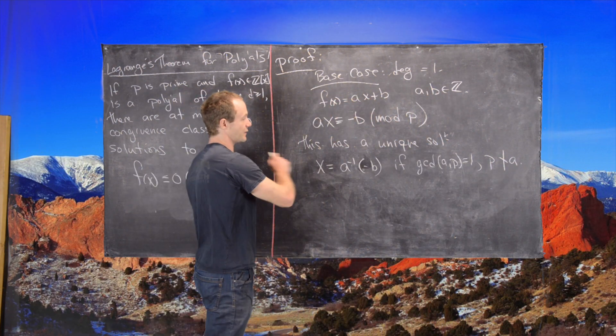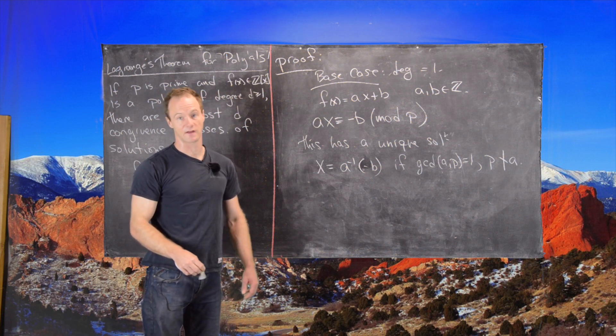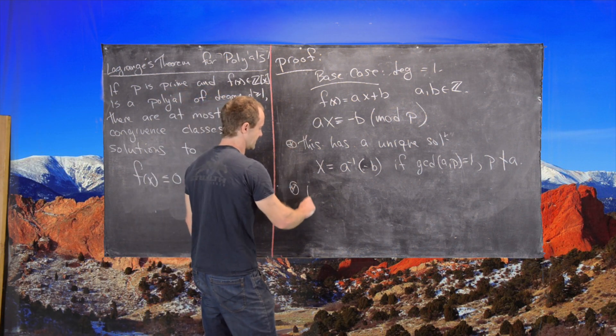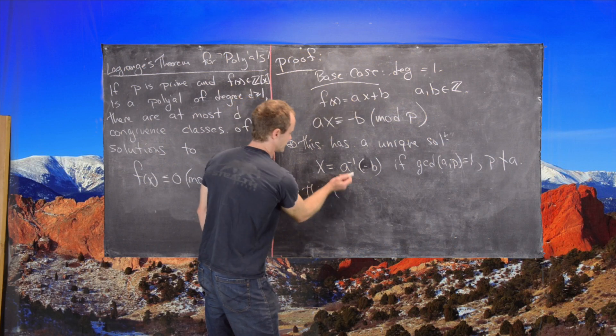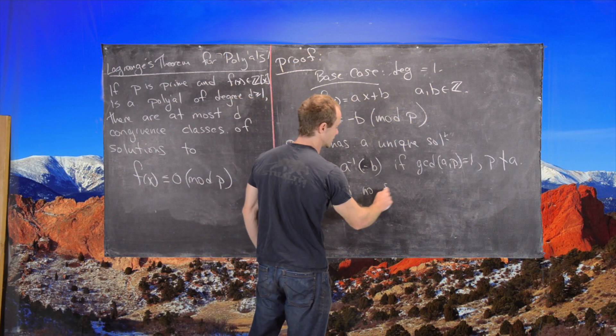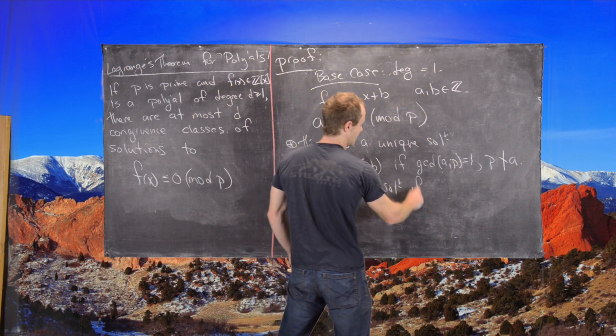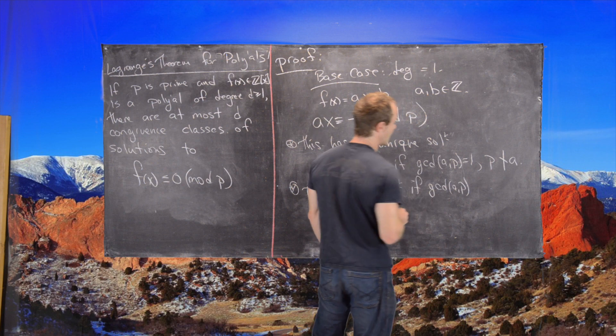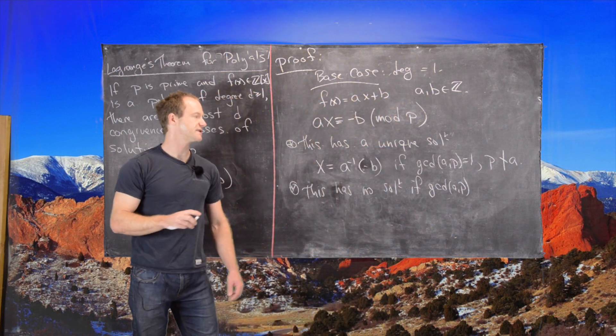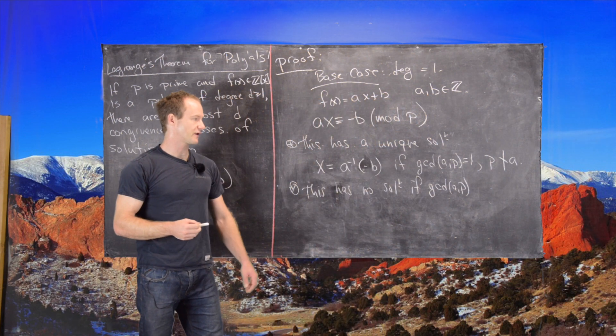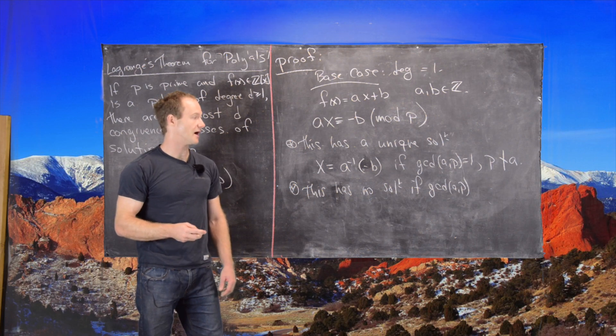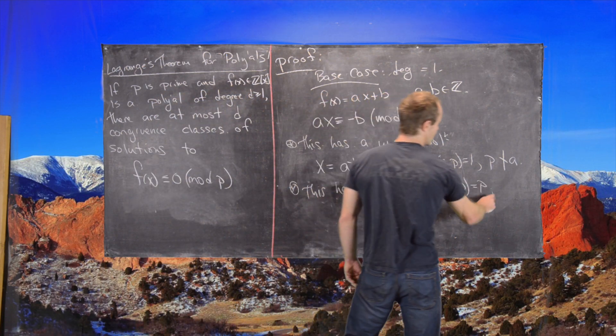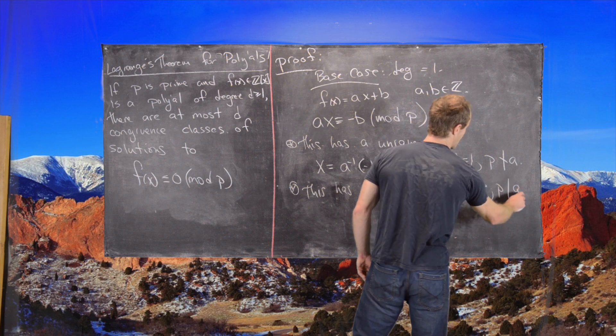A unique solution means it has exactly one solution. The second case is this has no solution if the GCD of A and P is not equal to 1. But notice, if you have a prime and you're looking at the GCD of A and a prime, the only chances are that it could be 1 or that prime, which is the same thing as P divides A.